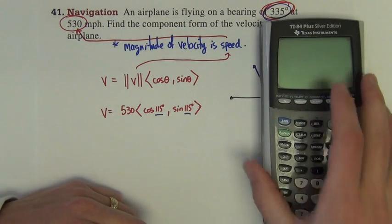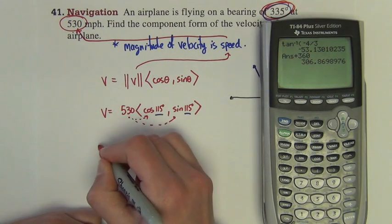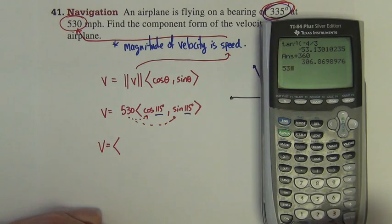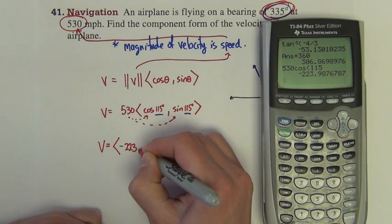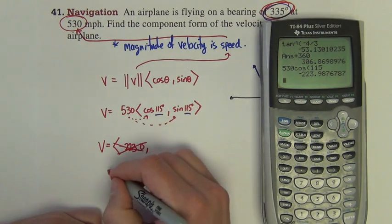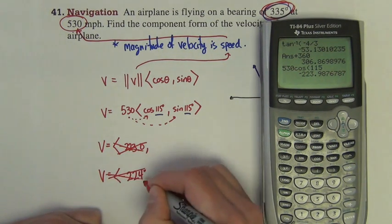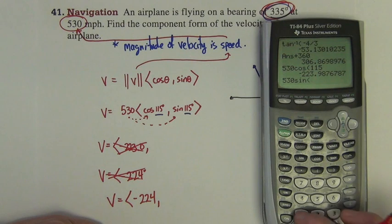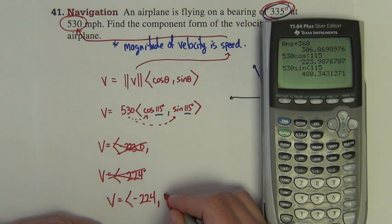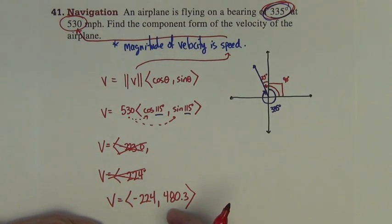So now we're ready to actually compute this. The 530 will be distributed in. So I want 530 times the cosine of 115. It's negative 223, we'll just say negative 224. And we want 530 sine of 115. If we round that, it'd be 480.3. That's the component form of the vector.